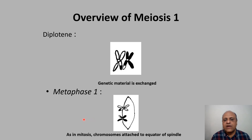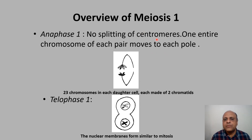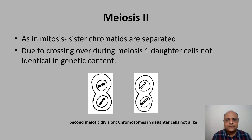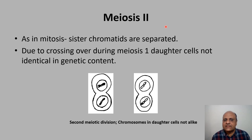In metaphase one the chromosomes are attached to the equator of the spindle. In anaphase one there is no splitting of centromeres — one entire chromosome of each pair moves to each pole, so the number of chromosomes is halved and daughter cells have haploid number (23 chromosomes), each made up of two chromatids. In telophase one the nuclear membranes form. In meiosis two, as in mitosis, sister chromatids are separated. Due to crossing over during meiosis one, daughter cells are not identical in genetic content.